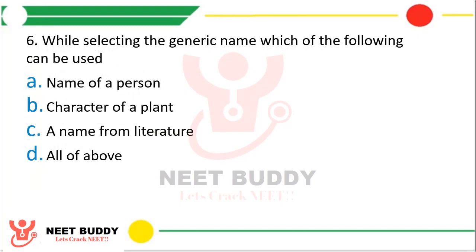Question 16. While selecting the generic name, which of the following can be used? Option A, Name of a person; Option B, Character of a plant; Option C, A name from literature; or Option D, All of the above. The correct answer is Option D, All of the above.